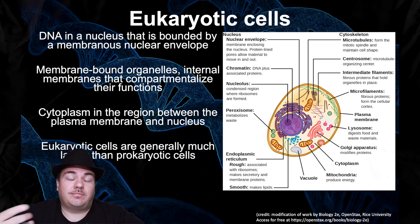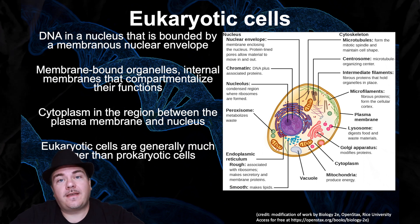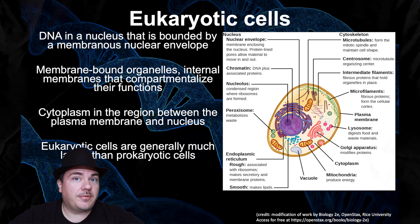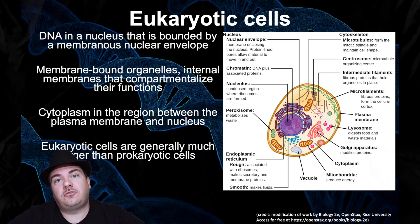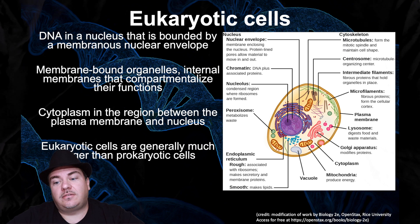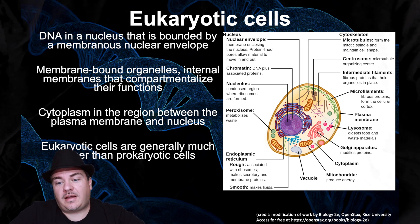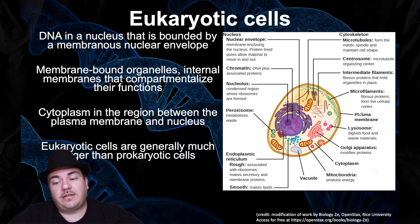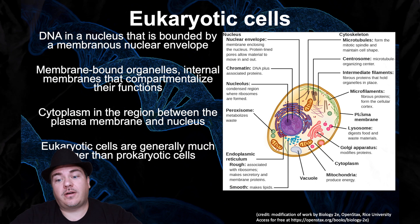One way I like to think about it: organelles are kind of like the organs for the cell, just like you have organs inside your body. Each organ is a compartment with a different function. For example, your stomach is a compartment whose job is to start digesting food. Similarly, cells have to eat, so cells have a compartment called a lysosome whose job is to break down food — the lysosome is kind of like the stomach for the cell. We're going to spend most of the upcoming lectures learning about the different organelles and their functions.